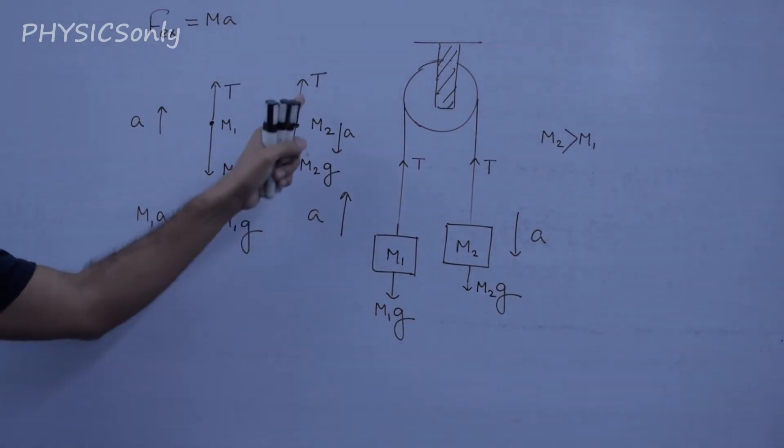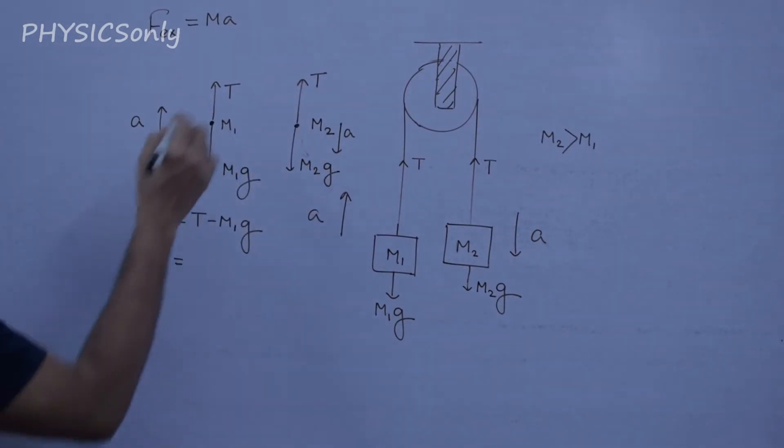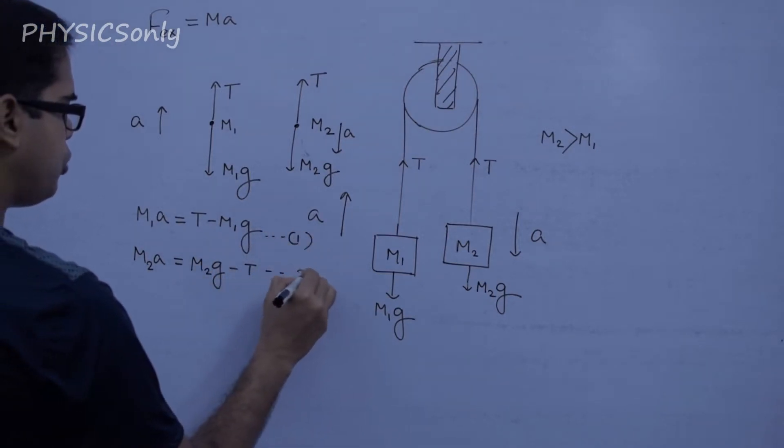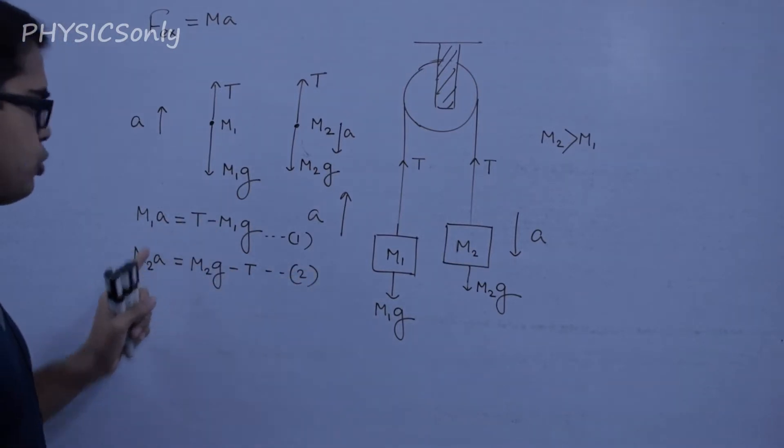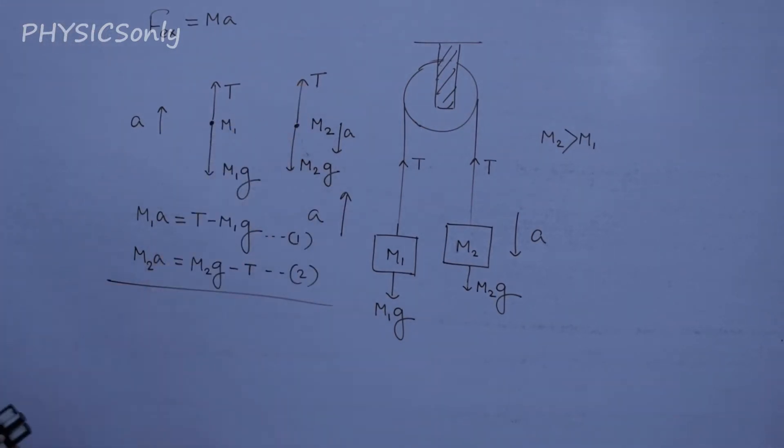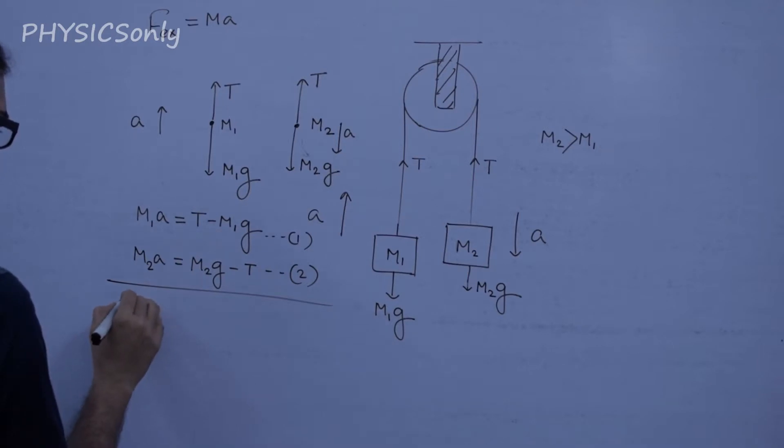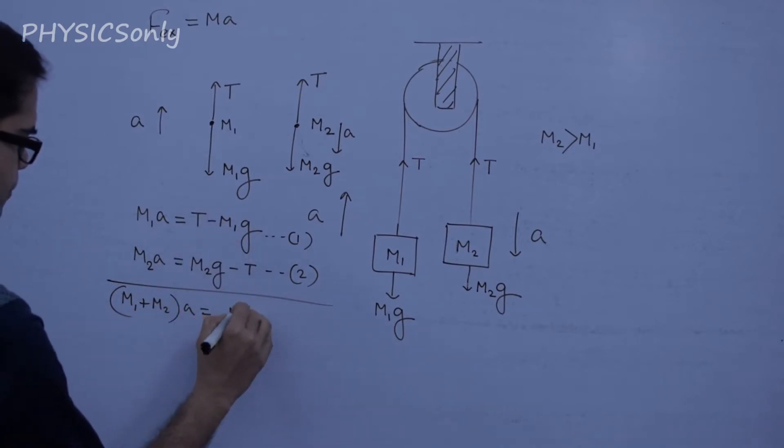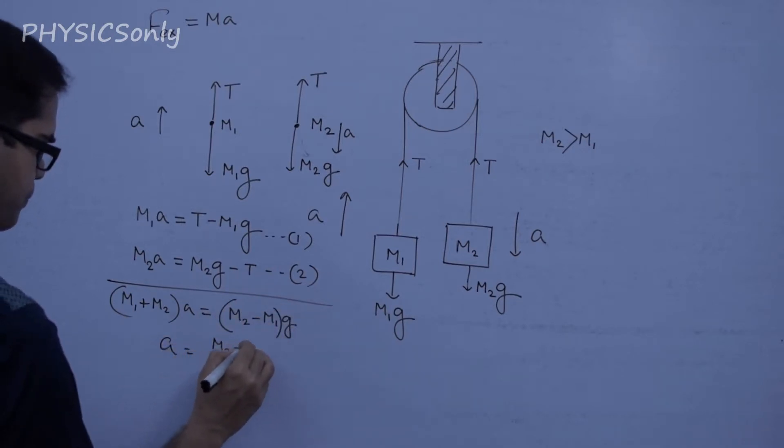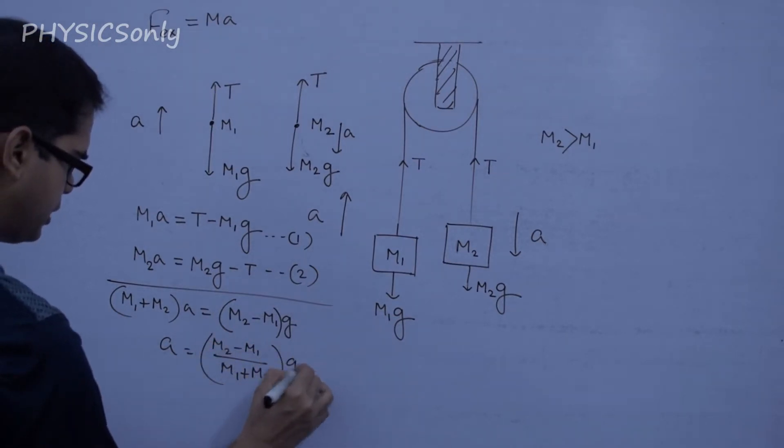We use M2g to get the equation. We have to find the data of the equation. M1a plus M1g equals what we get? M1a equals T minus M1g.